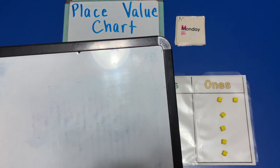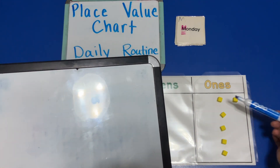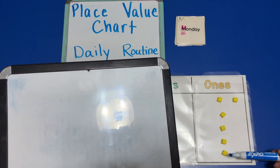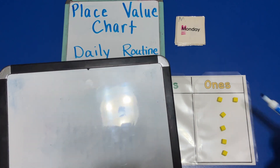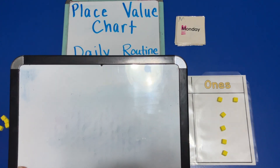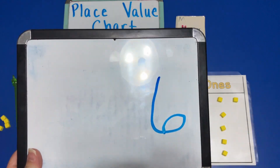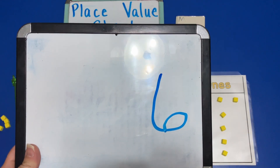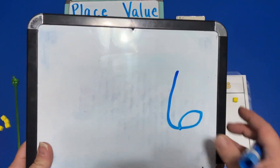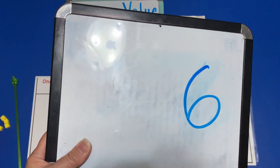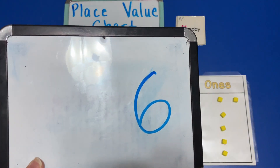Well on Monday our value is one, two, three, four, five, six. On Monday we have a value of six on our place value chart.